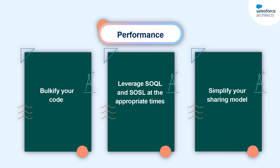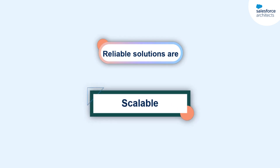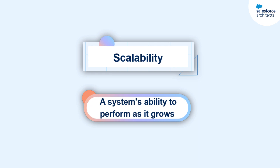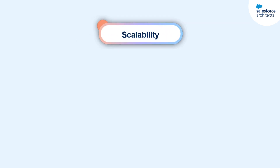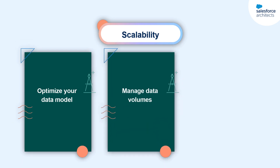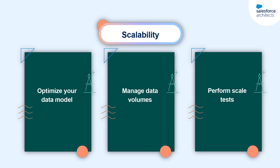Finally, reliable solutions are scalable. Scalability is a measure of a system's ability to continue to perform even when there are large increases in volumes of transactions or lots of users trying to access your system at the same time. As architects, we can create more scalable solutions by optimizing our data model, managing data volumes, and of course, performing scale tests.